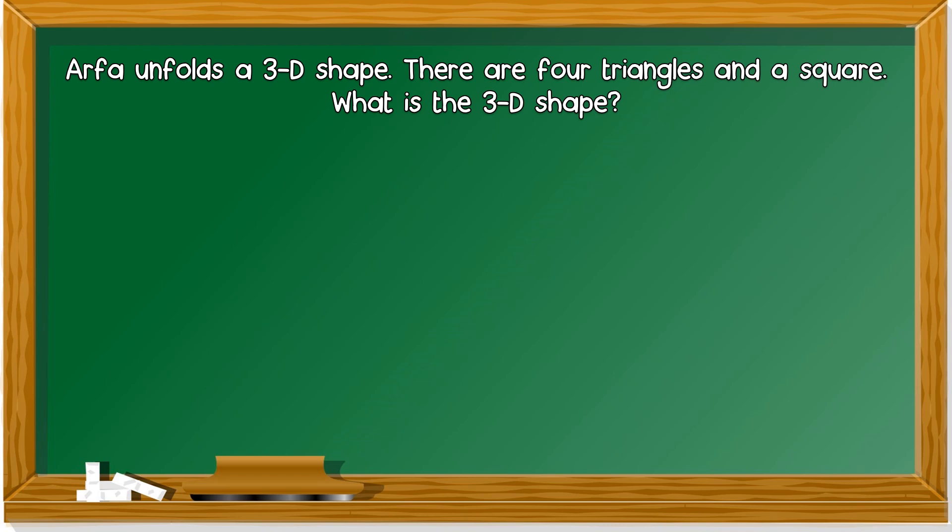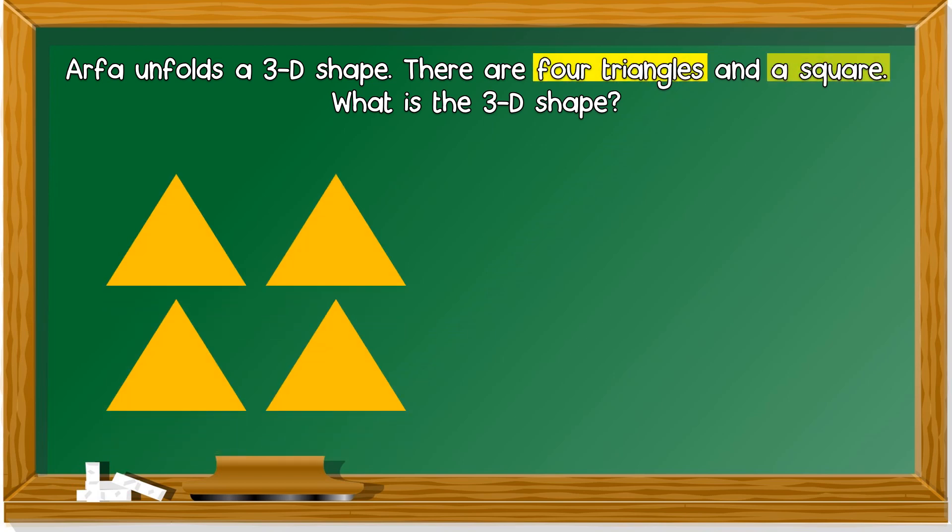The key here is 4 triangles and a square. What 3D shape has 4 triangles and a square? Yes, it's a pyramid.